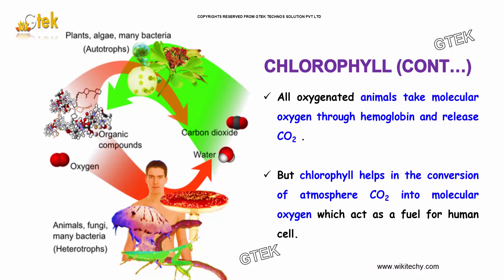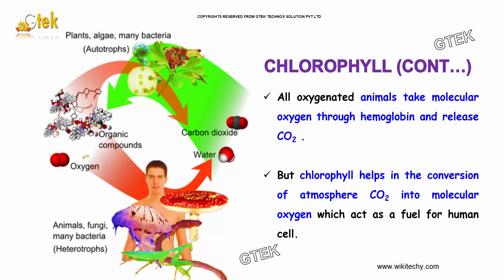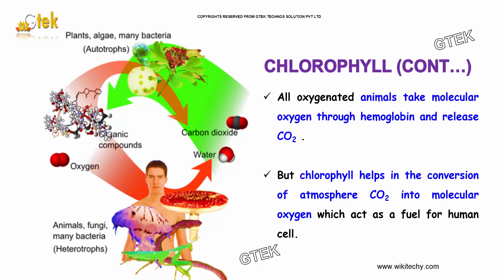All oxygenated animals take molecular oxygen through hemoglobin and release carbon dioxide. But chlorophyll helps in the conversion of atmospheric carbon dioxide into molecular oxygen, which acts as a fuel for human cells.